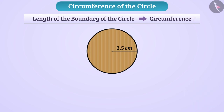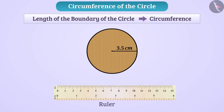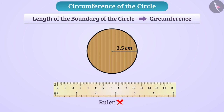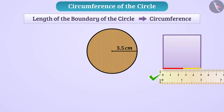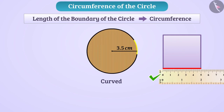Of course, a ruler cannot be used here because a ruler is used to measure the length of a straight line. Since the boundary of the circle is curved, we cannot find the length of its boundary with the ruler.